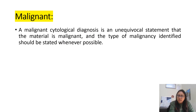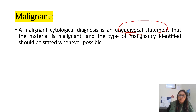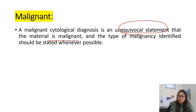The last category is malignant. Here there is unequivocal malignancy — no doubt the material is malignant. We also need to typify the type of malignancy: squamous, adenocarcinoma, ductal, lobular — we have to label it.